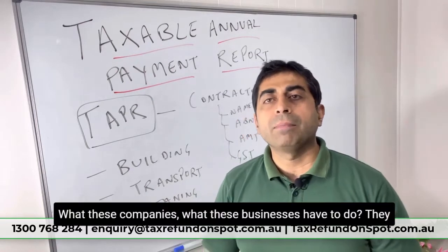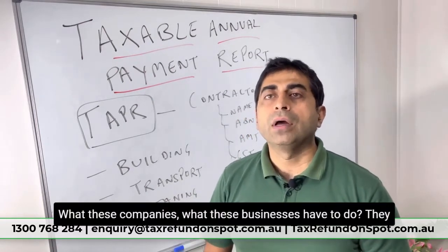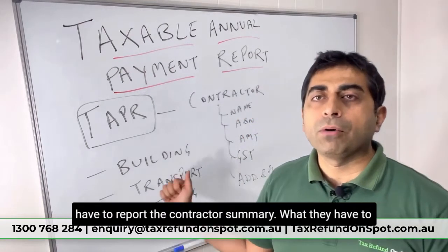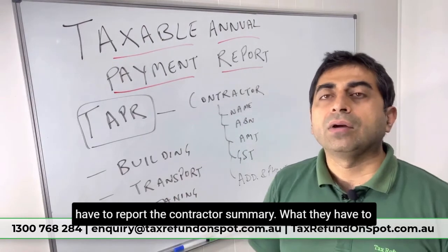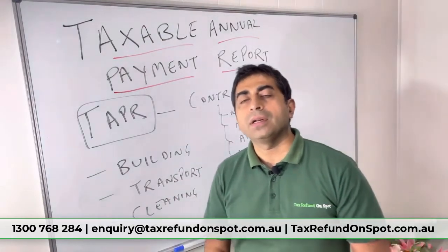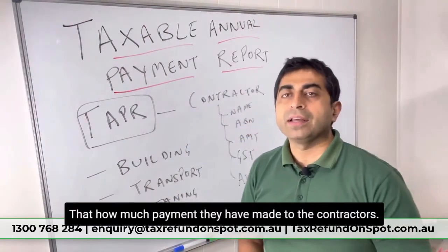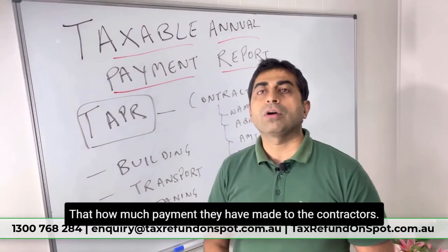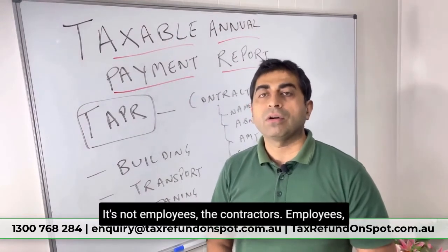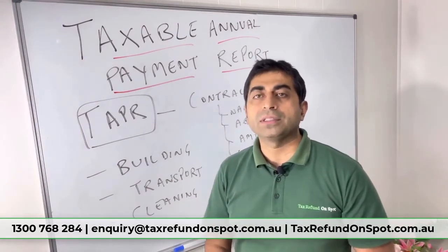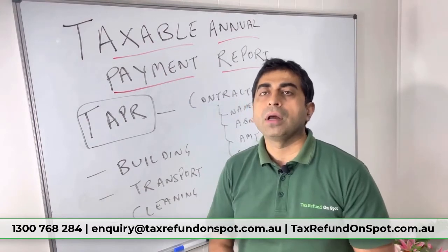What these businesses have to do is report the contractor summary — that is, how much payment they have made to contractors. This is not for employees; for employees, businesses have to issue a PAYG summary which they report separately.